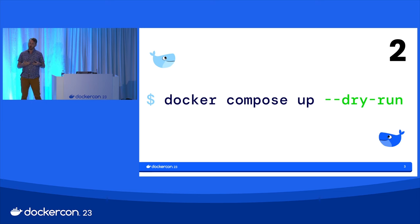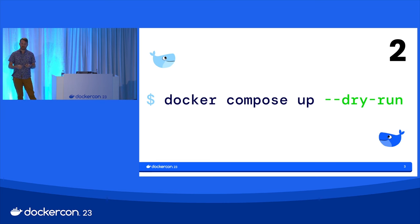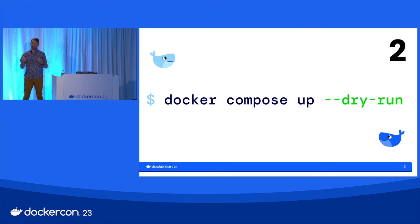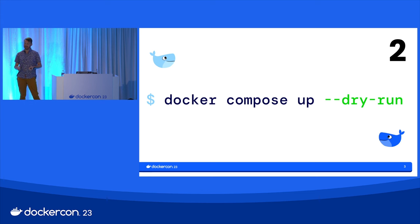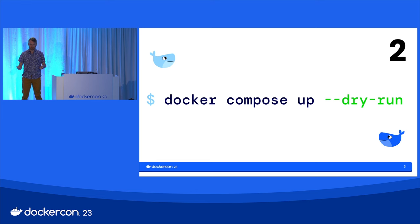It'll say, oh, I would need to create this new network, but it's not actually going to do it. It's another really helpful tool when you're iterating on your Compose project or you've just made a bunch of changes and you're afraid of what's going to happen if you run up. You can get a quick confidence check. This does work on other commands too — try it out, it's pretty universal.